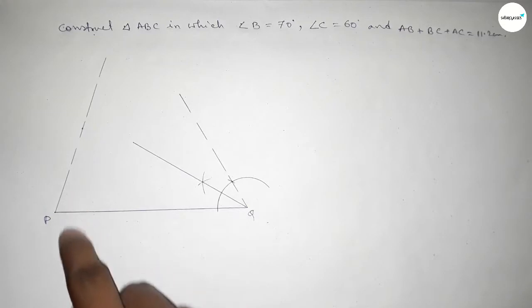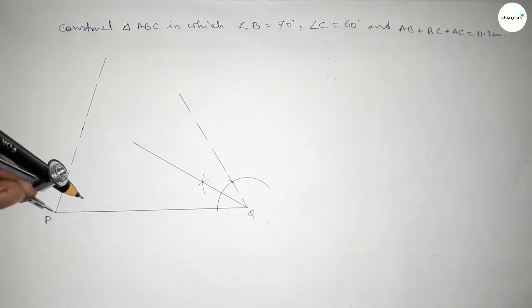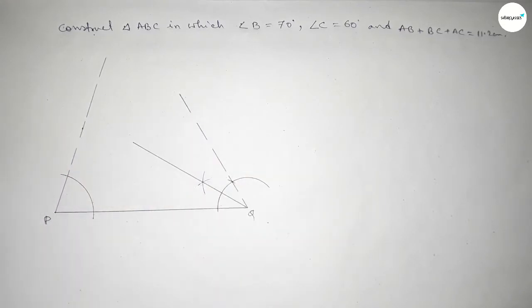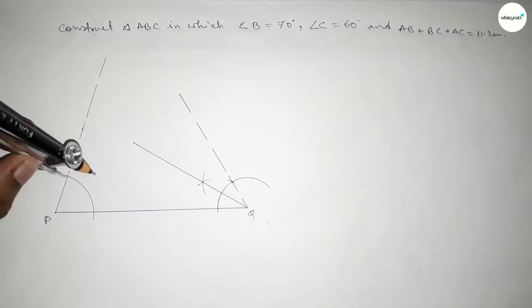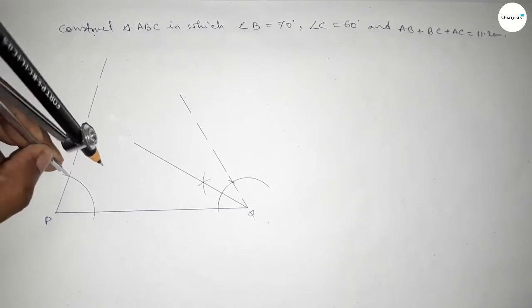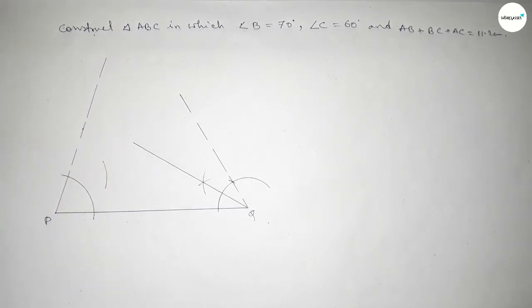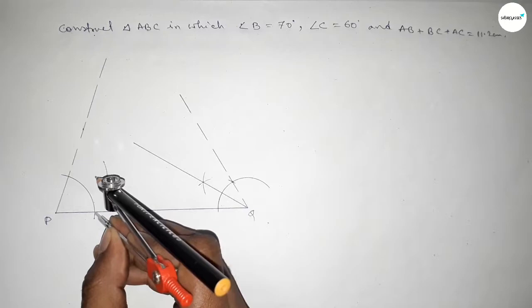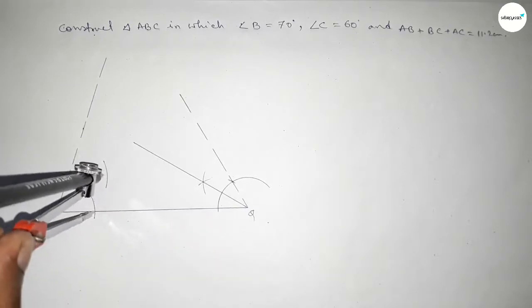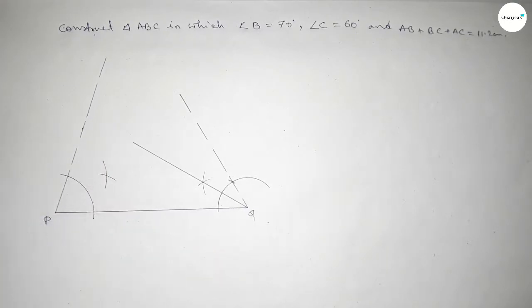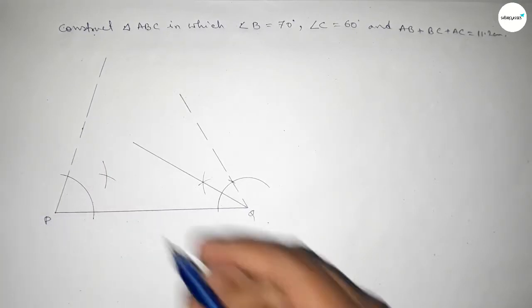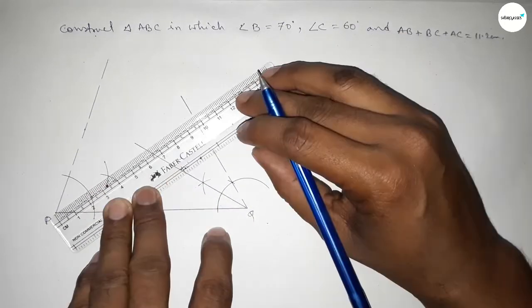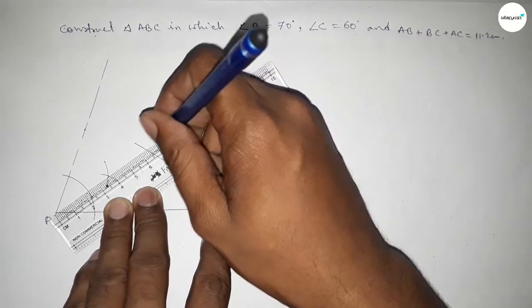Now bisecting this angle of 70 degrees. Taking any length and drawing an arc by this way. With the same length, putting the compass here and cutting here, and with the same length putting the compass here and cutting here. So both the curves intersect at a point. Now joining this bisector of the angle P.